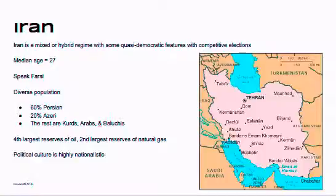It is a diverse population: 60% of the population is Persian, 20% are Azeri, and the rest are Kurds, Arabs, and Baluchis. Iran has the fourth largest reserve of oil and the second largest reserve of natural gas. The first largest national reserve of gas is in Russia — this is an important point of comparison among the AP-6, as all of them have significant amounts of oil. Even though there's a lot of diversity within Iran, because it is so different from the rest of its region and has historically had these similar boundaries, the political culture is highly nationalistic.